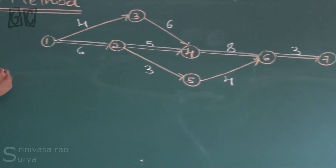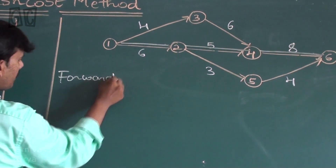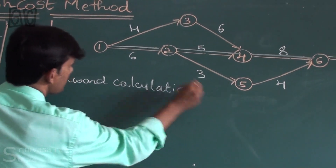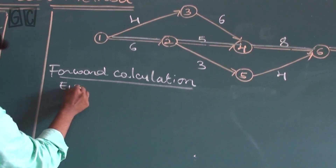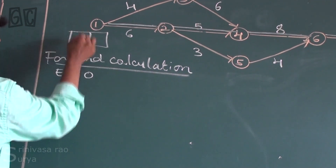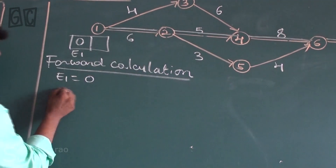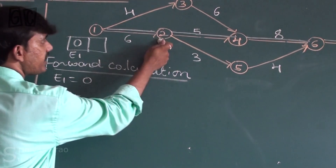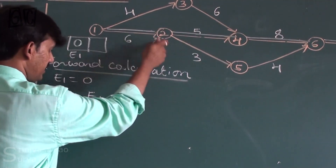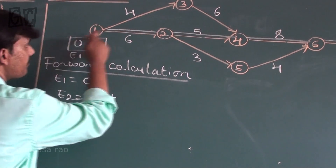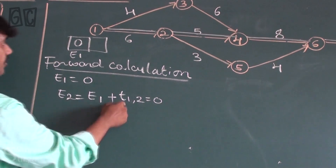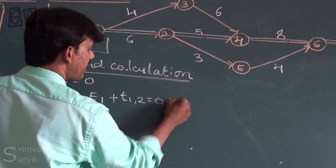Now I want to change the power calculation — the forward calculation. Fix E1 equal to 0. E2 is coming from E1 plus time taken from 1 to 2, so the value is 0 plus 6, which gives E2 equal to 6.